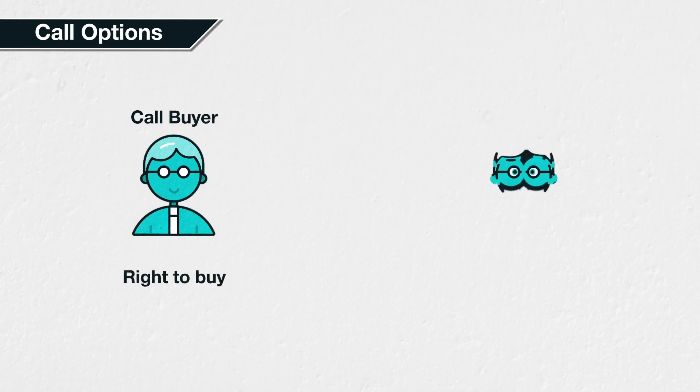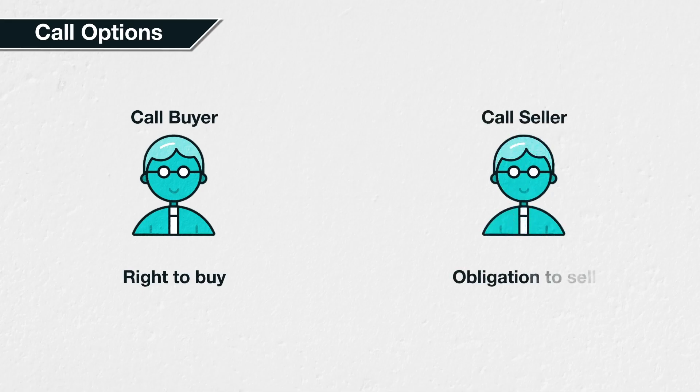The buyer of a call option is purchasing the right to buy the underlying asset at the strike price on the expiry date. On the other side of the trade, the seller of the call option has an obligation to sell the underlying asset to the option buyer, should the call option buyer choose to exercise their right.